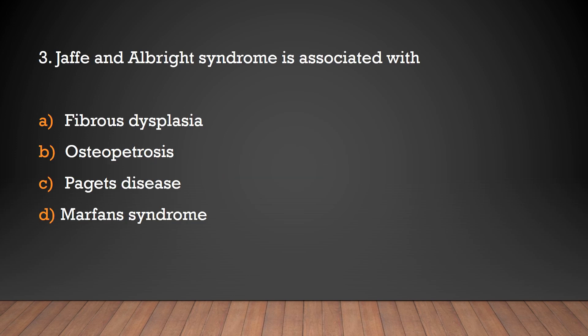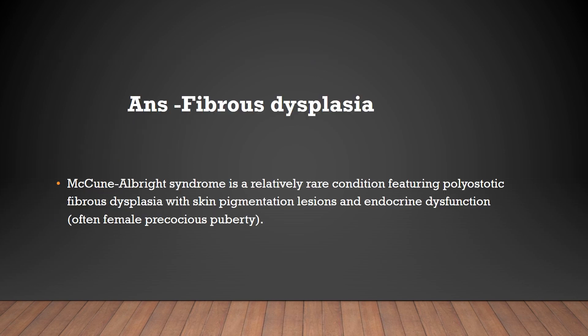Jeffy and Albright syndrome is associated with: fibrous dysplasia, osteopetrosis, Paget's disease, Morquio syndrome. Answer: Fibrous dysplasia. McCune-Albright syndrome is a relatively rare condition featuring polyostotic fibrous dysplasia with skin pigmentation lesions and endocrine dysfunction.